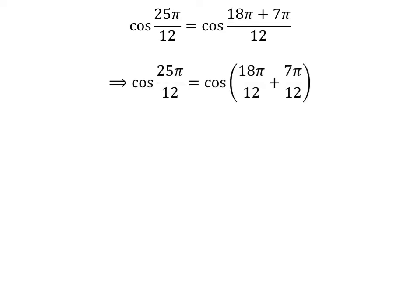The fraction can be expressed as a sum of two fractions. So, cosine of 25 times pi upon 12 is equal to cosine of 18 times pi upon 12 plus 7 times pi upon 12.